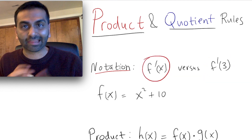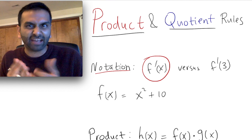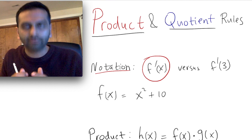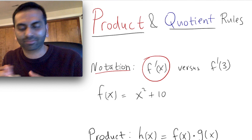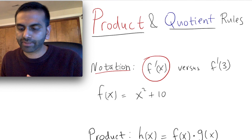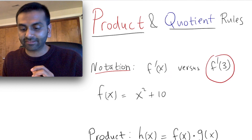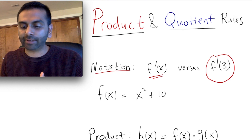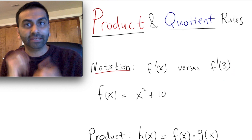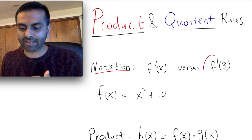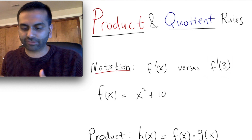Specifically, f prime of x is just the derivative with x left as x, so you could then take that equation, plug in x, and find the slope at that specific point. Versus f prime of 3 means find the derivative first and then plug in x as 3 — it's specifically the slope when x is 3.